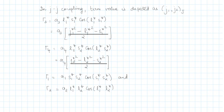Generally in JJ coupling, the term value is depicted with j1 and j2 within simple parentheses with a subscript capital J.